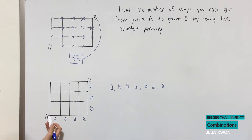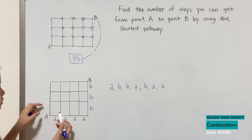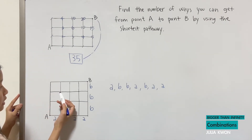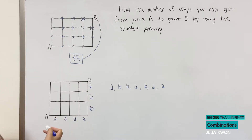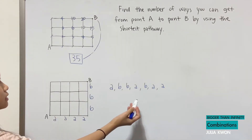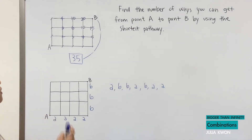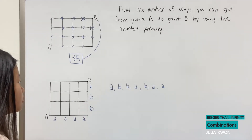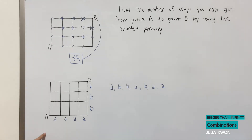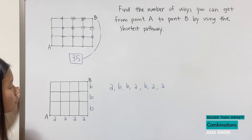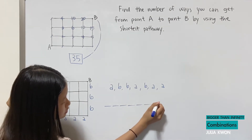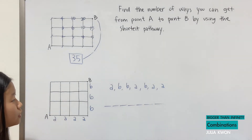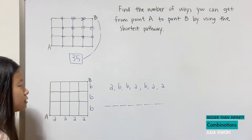So with A first, that would be going right to this point; then B, up to this point; B again, up; then A, right; then B, up; then A, A — and we've gotten from point A to point B using this sequence. So instead of counting it all, why not use these seven letters to solve for the number of ways? Since we have seven total, we can mix up these seven positions, which gives us seven factorial.